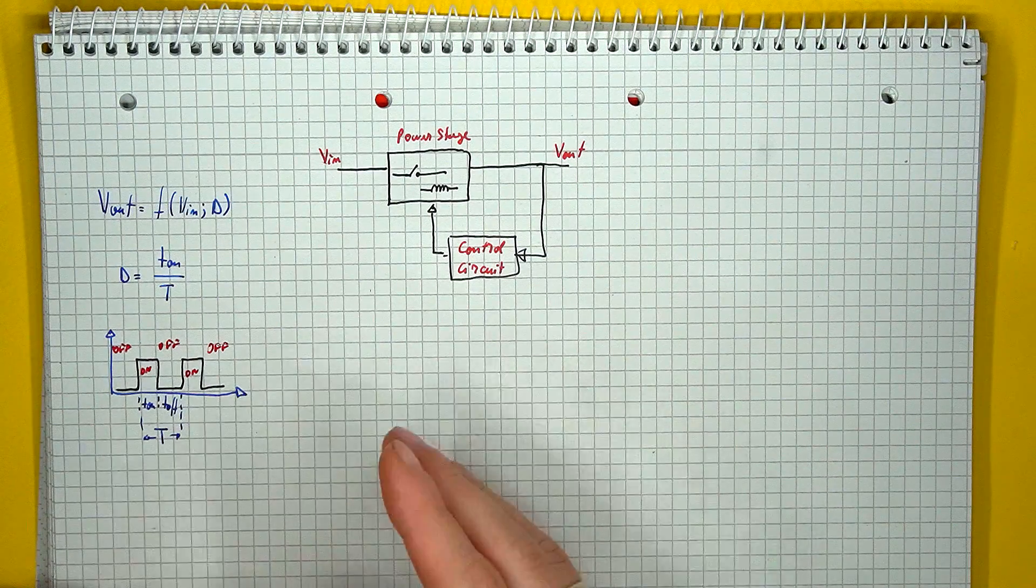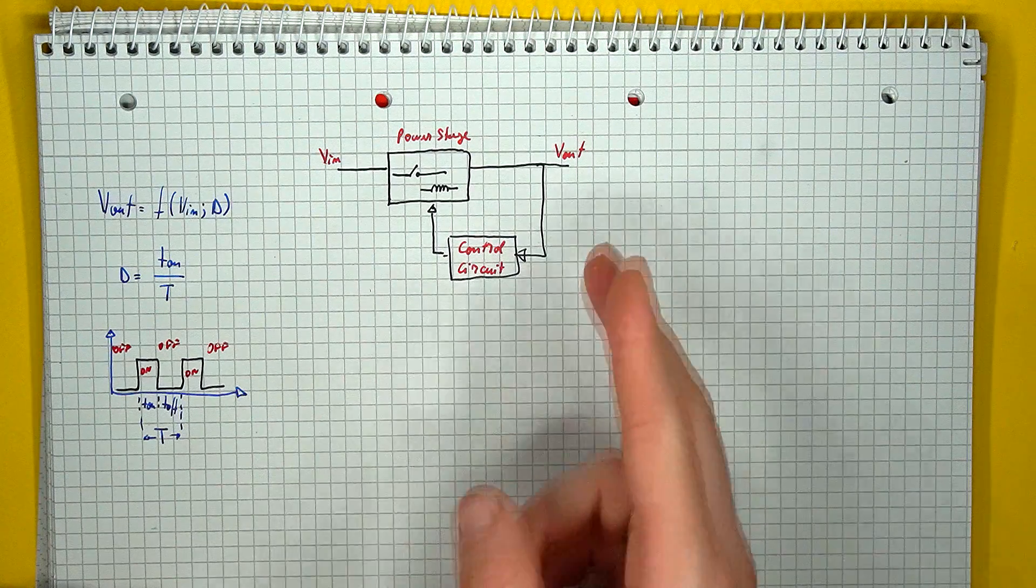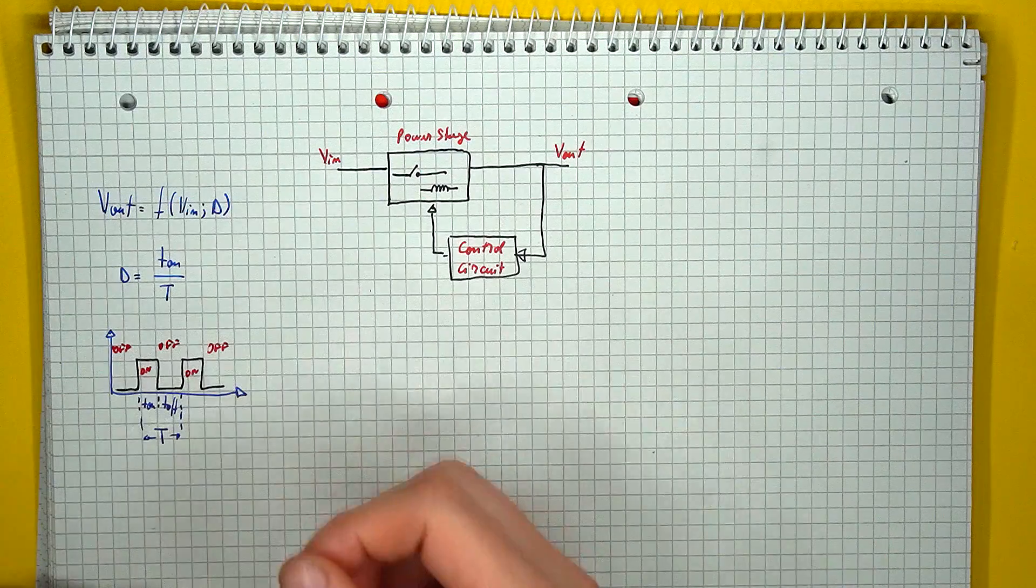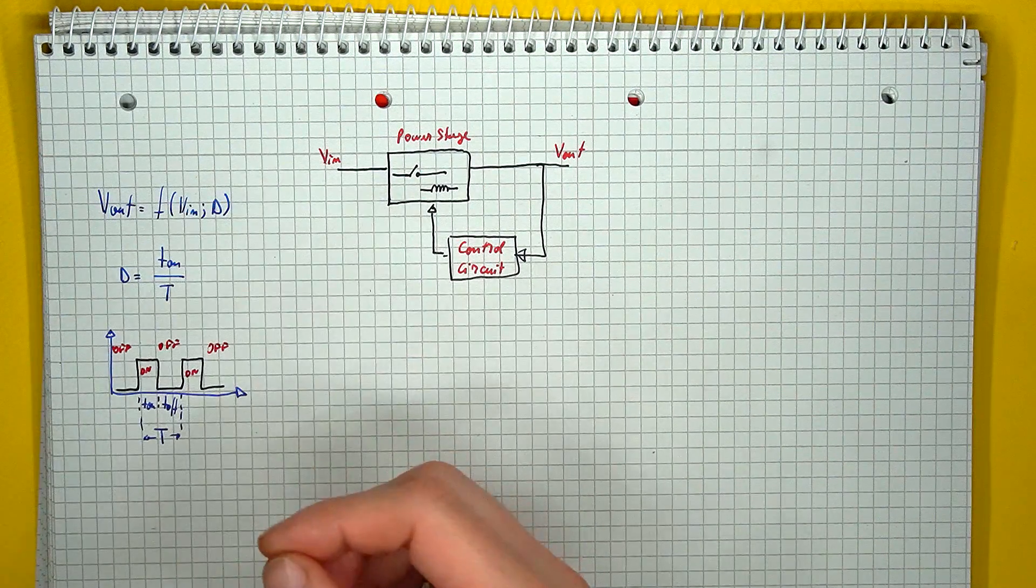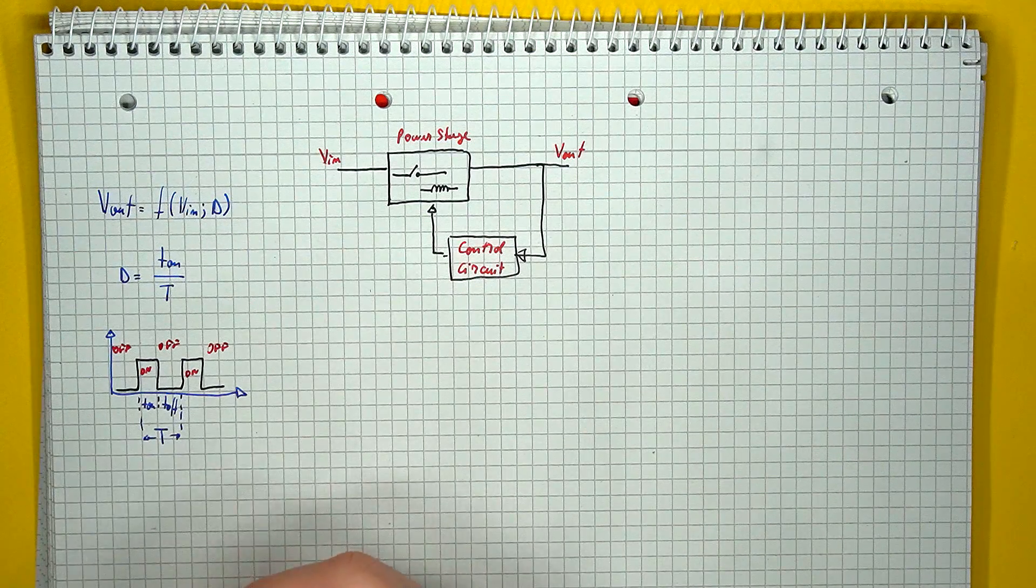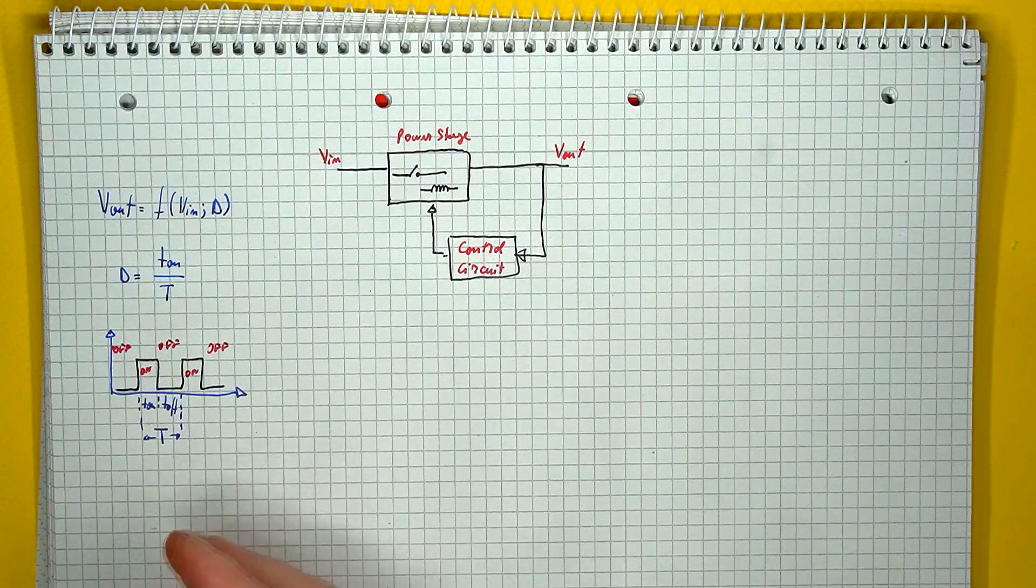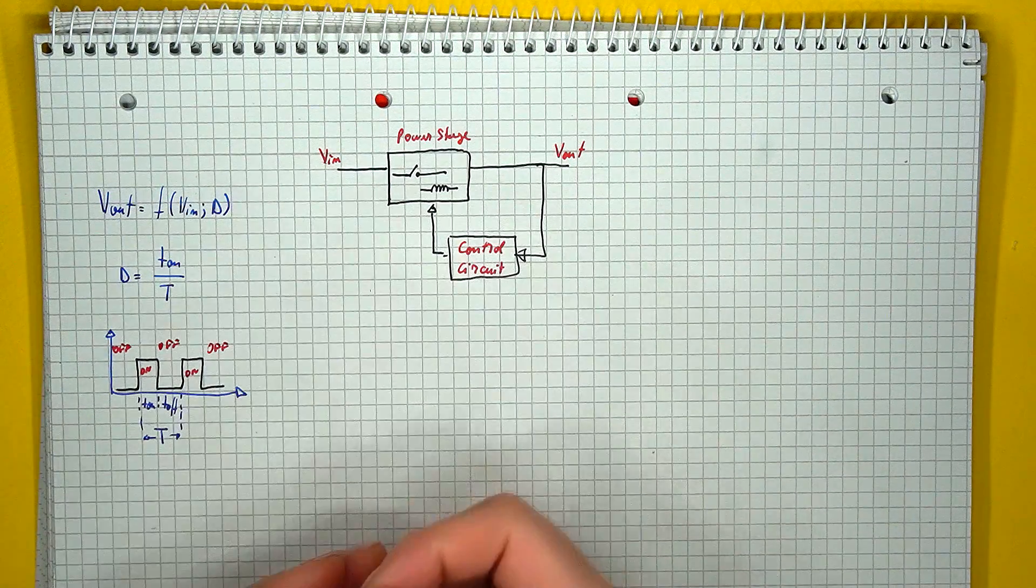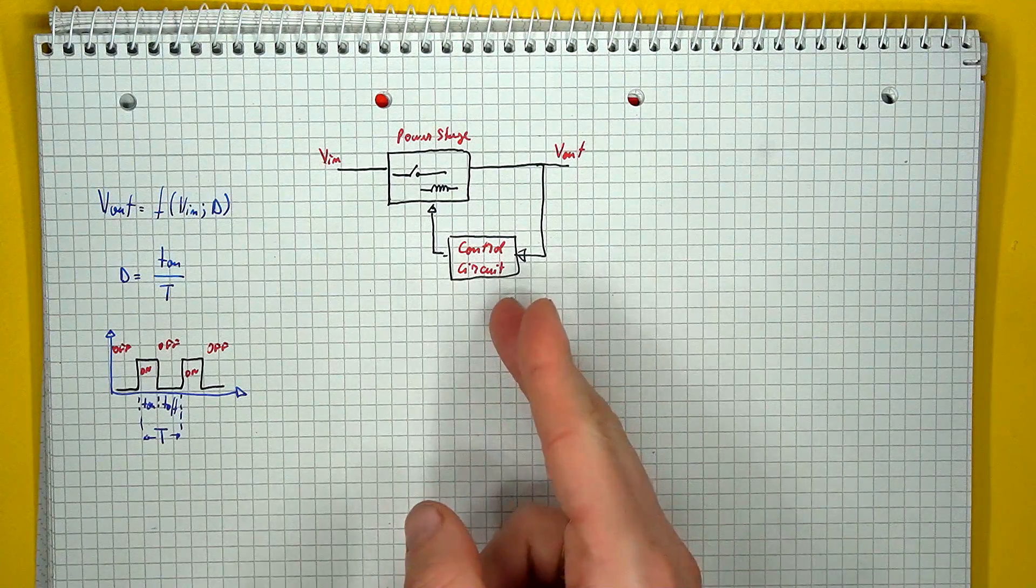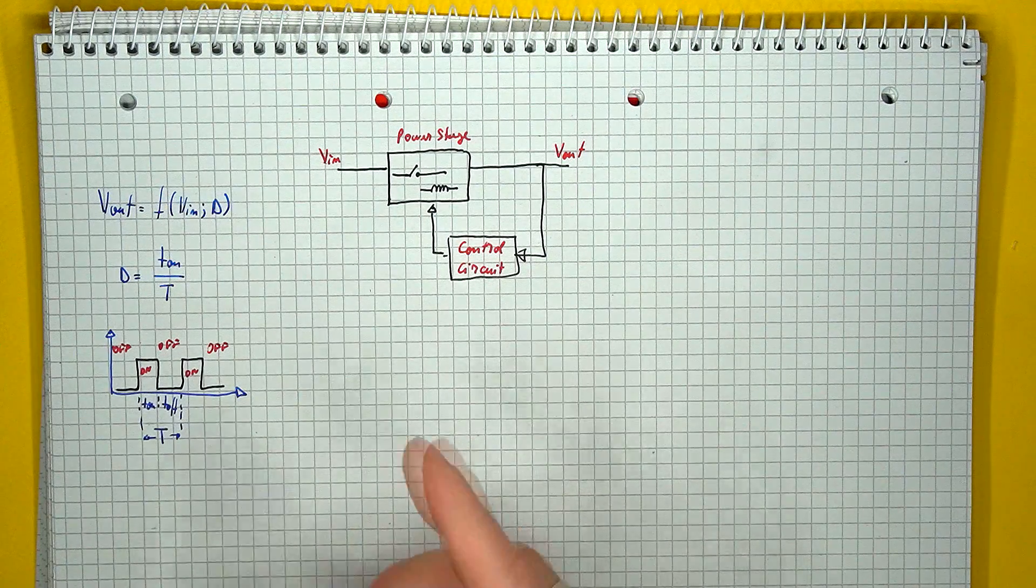In general, while a switching converter is kept in continuous conduction mode, the output to input voltage ratio can be set with some sort of duty cycle based function. This duty cycle being defined as the ratio between the switch's on time divided by the total switching period. So to change the output voltage, adapt to variations in input voltage, or adapt to variable load conditions, the control circuit needs to adjust the duty cycle parameter.